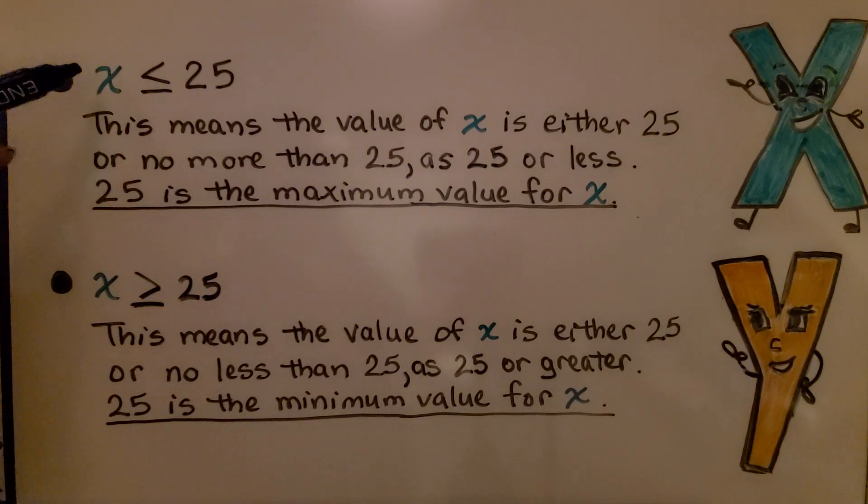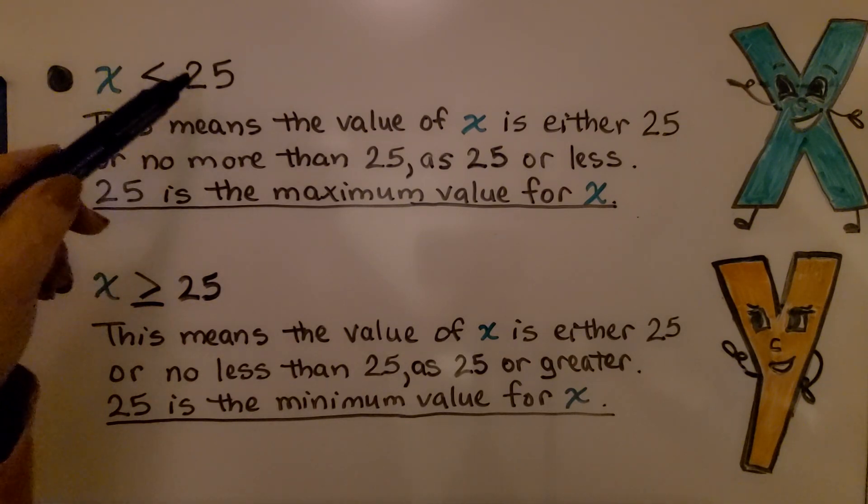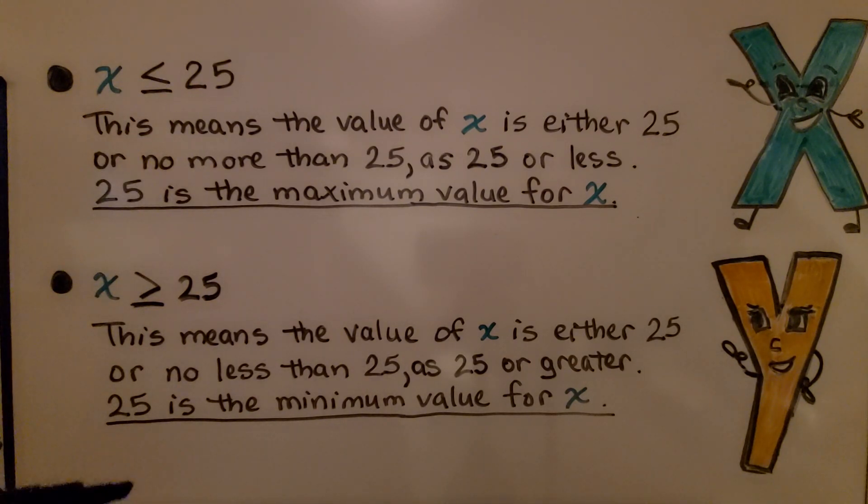If we see a variable is less than or equal to 25, that means the value of x, the variable, is either 25 or no more than 25, as 25 or less. 25 is the maximum value for x.